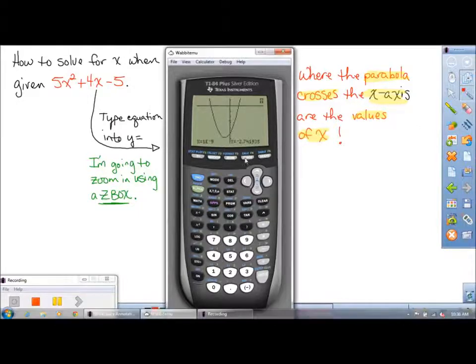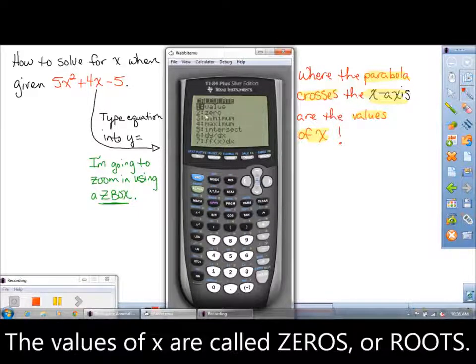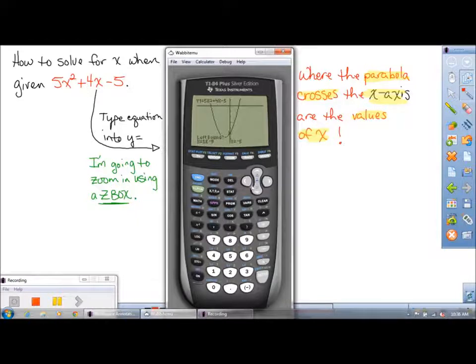We're going to go 2nd Calc and say, hey calculator, calculate the zero. I'm going to select that and scroll over using my left arrow to calculate that left x-intercept.